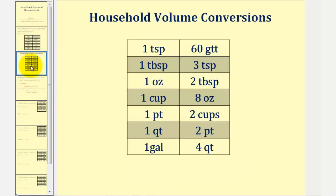And here are the conversions between units. One teaspoon equals sixty drops. One tablespoon equals three teaspoons. One ounce equals two tablespoons. One cup equals eight ounces. One pint equals two cups. One quart equals two pints. And one gallon equals four quarts.